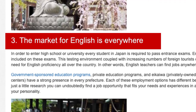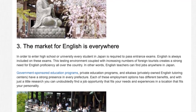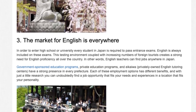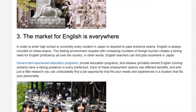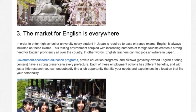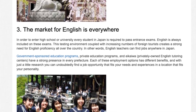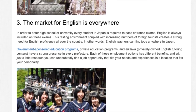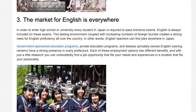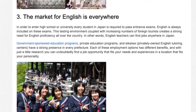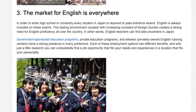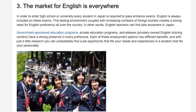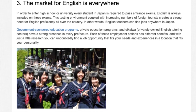3. The Market for English Is Everywhere. In order to enter high school or university, every student in Japan is required to pass entrance exams, and English is always included. This testing environment coupled with increasing numbers of foreign tourists creates a strong need for English proficiency all over the country. English teachers can find jobs anywhere in Japan. Government-sponsored education programs, private education programs, and EIKAWA (privately owned English tutoring centers) have a strong presence in every prefecture. With a little research, you can undoubtedly find a job opportunity that fits your needs and experiences in a location that fits your personality.